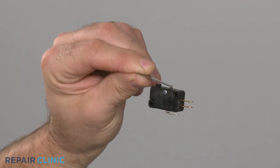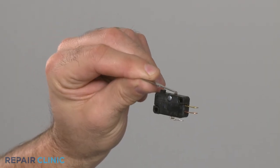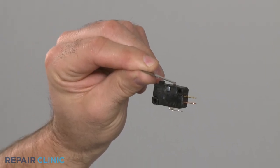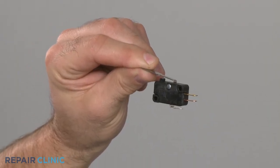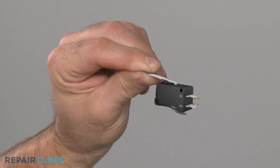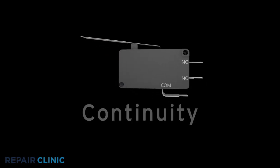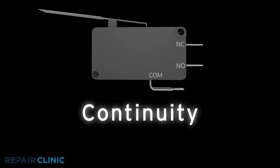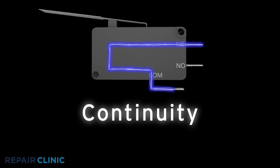Since you can't always tell if a range vent hood switch has failed simply by looking at it, you'll need to perform a continuity test. A continuity test will determine if a continuous electrical path is present in the switch.